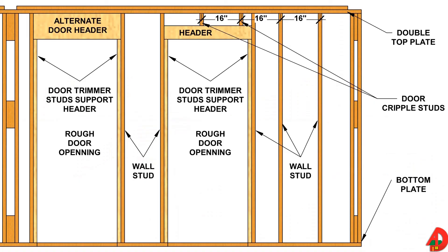A rough opening must be framed in a wall wherever a door or window will be placed. Rough opening dimensions must allow the window or door to fit plus the required clearance around the frame. Rough door openings are framed with a header, trimmer studs, wall studs, and in some cases, cripple studs.